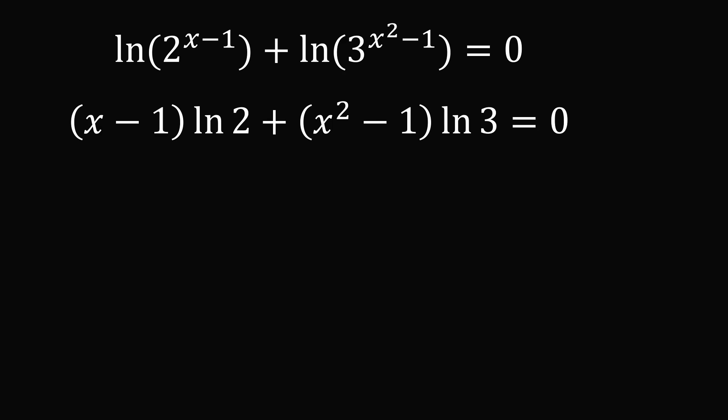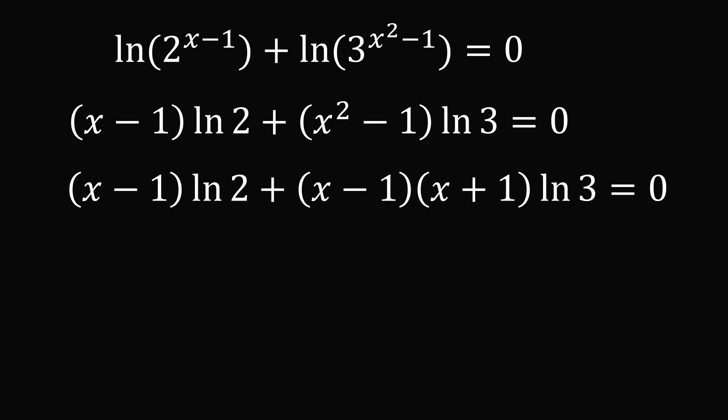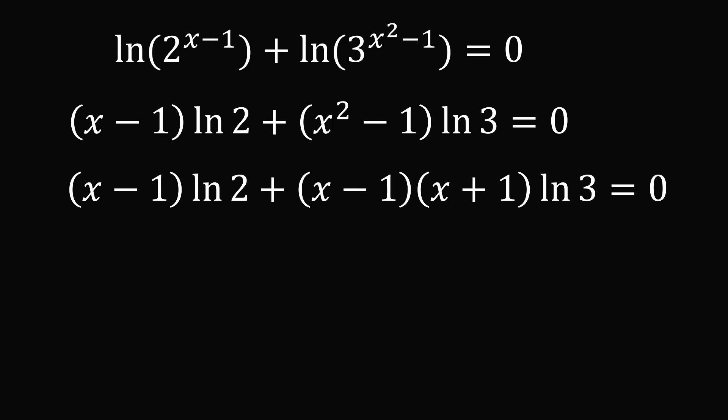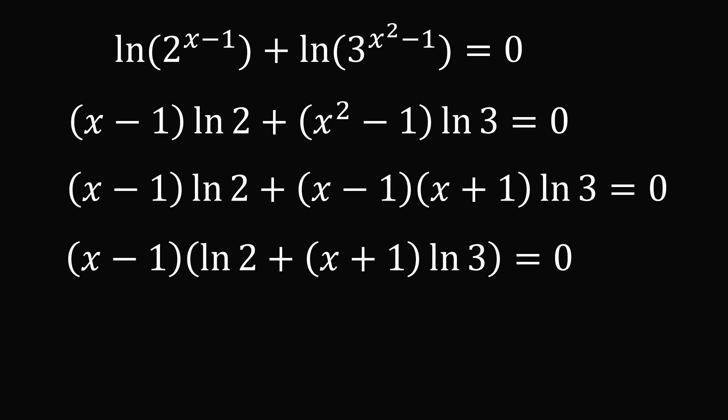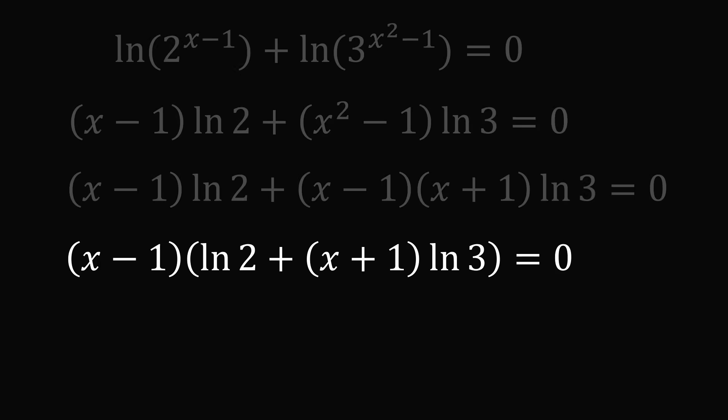Note that x squared minus 1 is a difference of squares, so it factors as x minus 1 times x plus 1. After substituting this factorization, we now have a factor of x minus 1 in both terms, so we can factor the equation: x minus 1 times the quantity ln 2 plus x plus 1 times ln 3, all equal to 0.